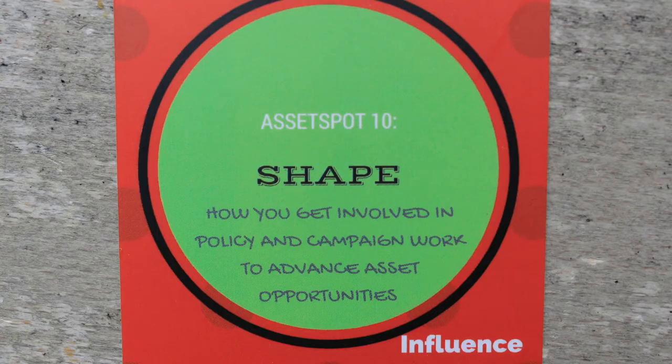Asset Spot number 10 is Shape, which picks up the systemic influence and change layer of the cake. It asks what responsibility an organisation has to engage in campaign and influence work to ensure that the systems, policies, and approaches influencing young people's lives are more asset-balanced and asset-focused. That means an organisation needs to do more than just work with and support young people — it's also about involving young people in a broader campaign to make the world a more asset-based one.